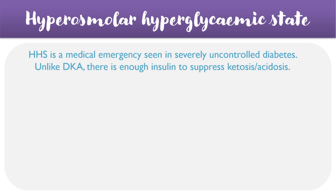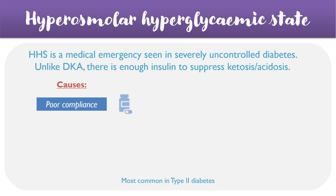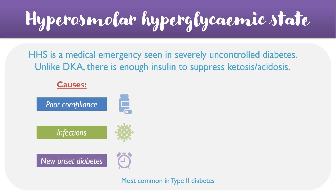In cases of severely uncontrolled diabetes, patients may go on to develop a rare condition known as hyperosmolar hyperglycemic state, or HHS, which is most commonly seen in type 2 diabetics. There can be multiple causes behind this — for example, poor compliance with medications, infections which exacerbate the condition, or it could be the first point of presentation for a patient who did not have a previous diagnosis of diabetes.